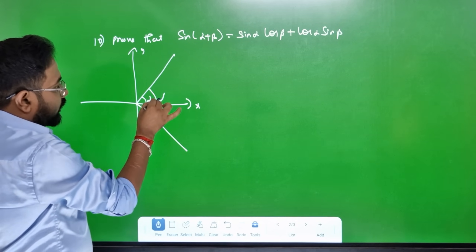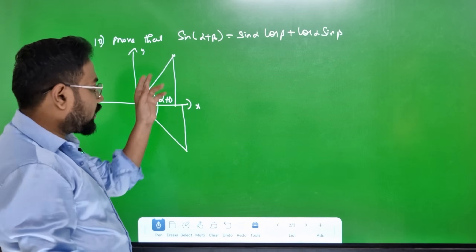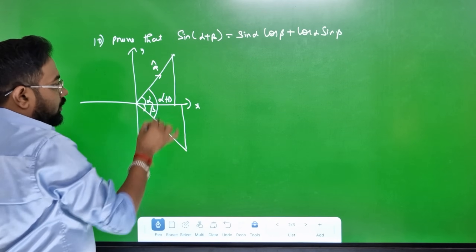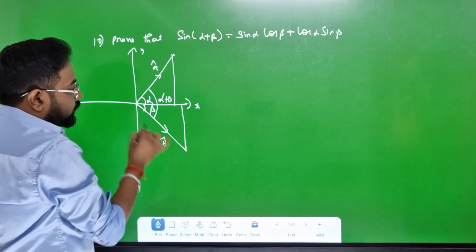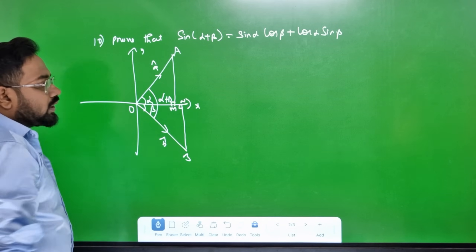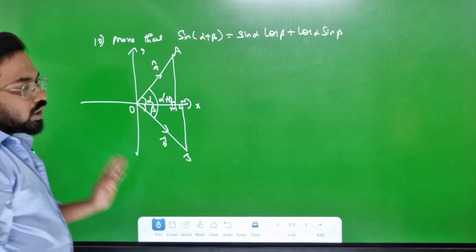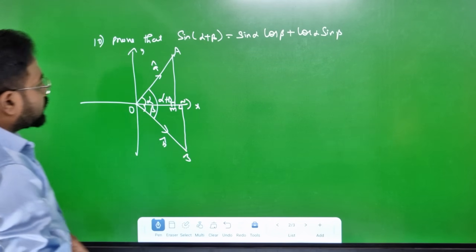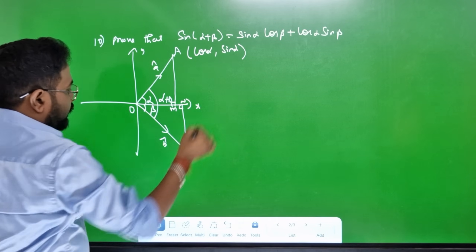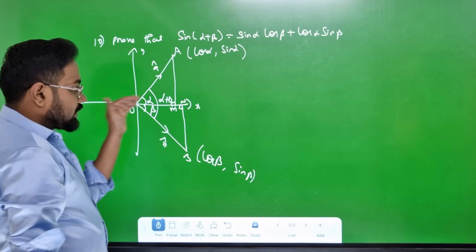This is a perpendicular line, this is a triangular line, then the coordinates are correct. This is a-cap, this is b-cap, this is O, this is B, this is A, this is M and N. In the book, you have to get a-cap. First, the coordinates are cos alpha, sin alpha, cos beta — X-axis cos beta, Y-axis sin beta.